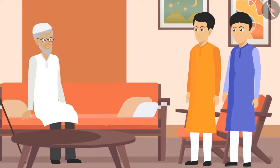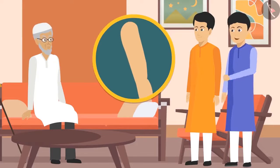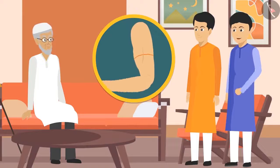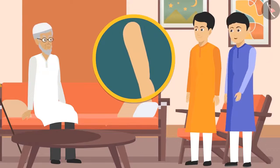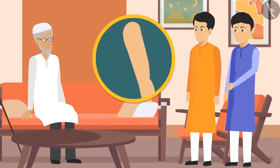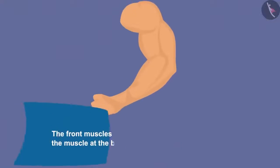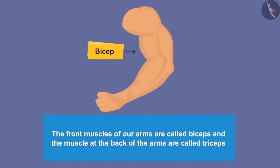To demonstrate, one student explained: when you close your fist and touch your chest with it, the front muscle of the arm swells as it contracts. When you take your hand back, that muscle relaxes and the muscle at the back contracts. Chacha confirmed that the front muscles of the arms are called biceps and the back muscles are called triceps.